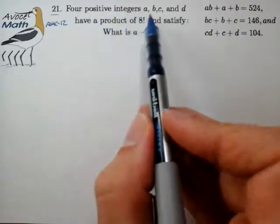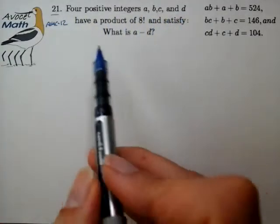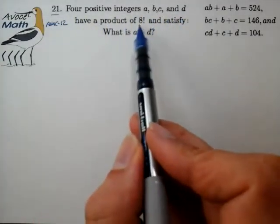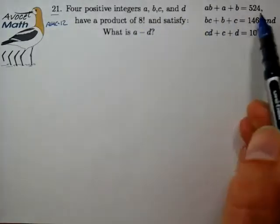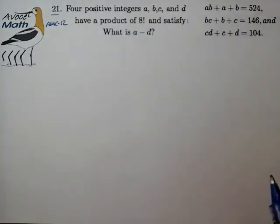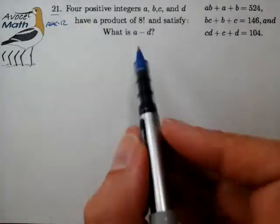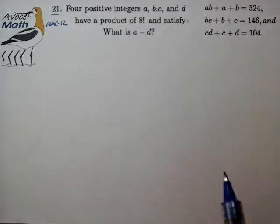We have four positive integers A, B, C, D that have a product of 8 factorial and satisfy these sets of three equations. And we're looking for the value of A minus D.